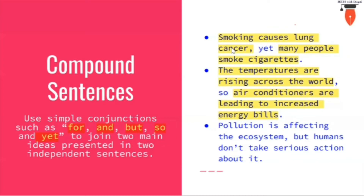Look at the last one: 'Pollution is affecting the ecosystem' and 'humans don't take serious action about it.' These two ideas are contradicting each other, and that is why we have used 'but.' In places where you want to add on to ideas, you can use 'and.'